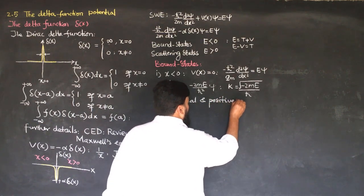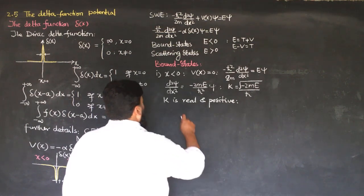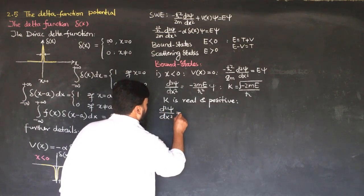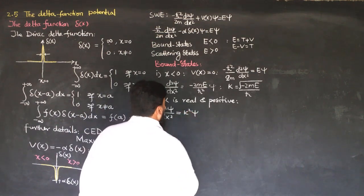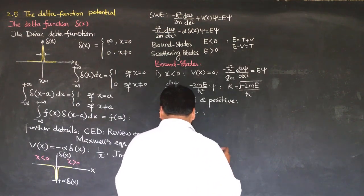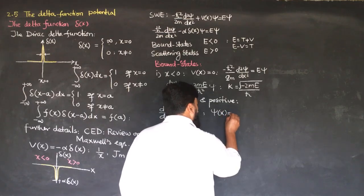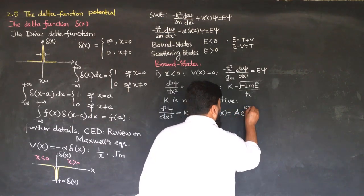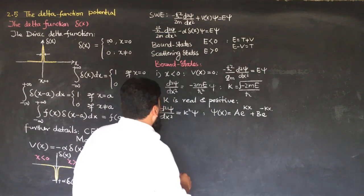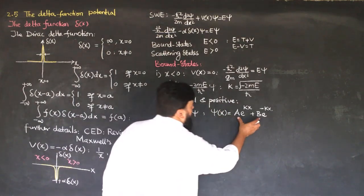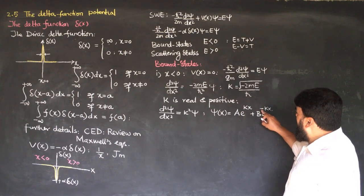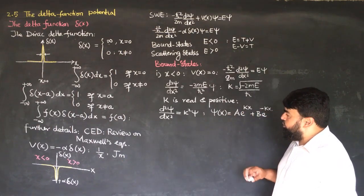With the negative sign accommodated in k, the equation becomes d²ψ/dx² = k²ψ. This is a second-order differential equation we've solved many times, and the general solution in exponential form is: ψ(x) = A·e^(+kx) + B·e^(-kx). We need to check which solution is physically valid for our geometry.